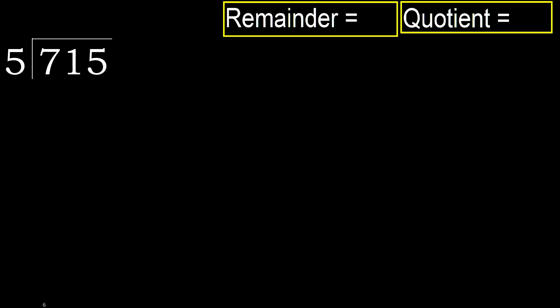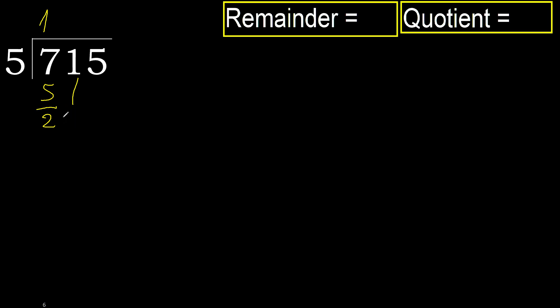715 divided by 5. 7 is not less, therefore start with 7. 5 multiplied by which number is nearest to 7 but not greater? 5 multiplied by 2 is 10, 10 is greater. Multiplied by 1 is 5, 5 is not greater. 7 minus 5 is 2.